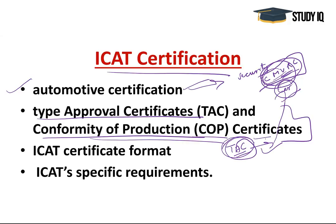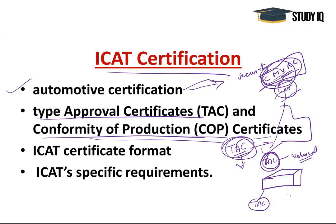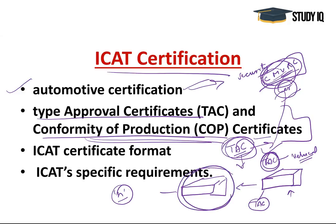The Conformity of Production certificate is a means of evidencing the ability to produce a series of products that exactly match the specification, performance, and marking requirements outlined in the TAC. For example, once a manufacturer receives a TAC for a product, the COP certificate means they can produce the same kind of product in a number of series — any number of products of that particular shape, structure, and features.